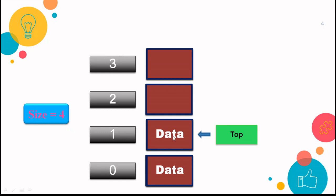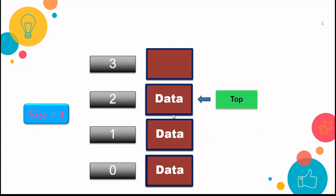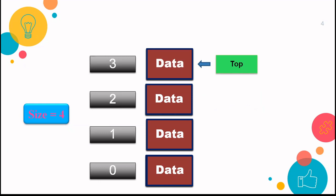I will insert one more element. Again, top is incremented: one plus one is two, and data is placed at the new top location. Finally, we insert data at the last location. Now top is pointing to size minus one, which is four minus one, that is three. When the stack capacity is full and you further try to insert one more element, the overflow condition arises — which we already discussed.